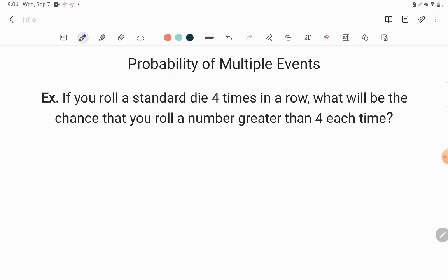So it says, if you roll a standard die four times in a row, what will be the chance that you roll a number greater than four each time? For my students who are maybe out of the country, not familiar with games, you have no idea what I'm talking about rolling a standard die. Good news - I've never seen a dice problem on the GED.